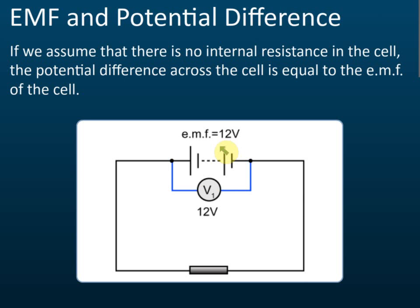If the EMF equals 12 volts and we assume there is no internal resistance in the cell — how do we know? If there is internal resistance, the question will tell you by writing a small letter r equal to, say, 1 ohm. This small letter r represents internal resistance, or the question will explicitly state that the internal resistance equals 1 ohm or 2 ohm.